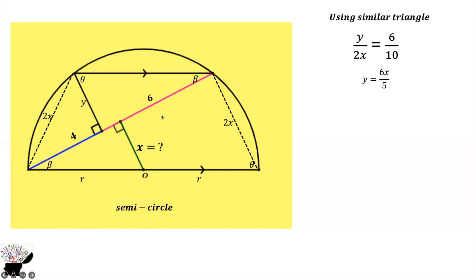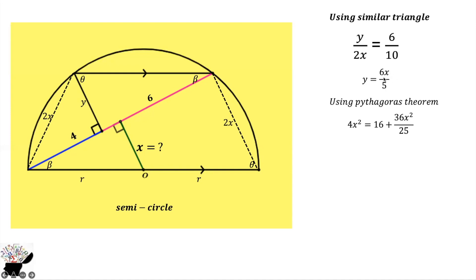Using the Pythagorean theorem, we get 2X squared plus 4X squared equals Y squared, which gives 4X squared plus 16X squared equals 4X squared. Since Y equals 6X over 5, squaring gives 36X squared divided by 25. Multiplying through by 25, we get 100X squared equals 400 plus 36X squared.